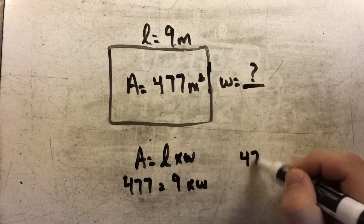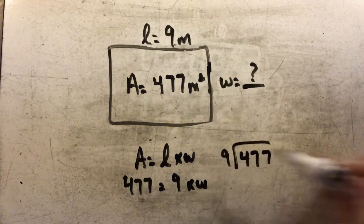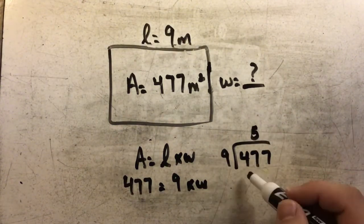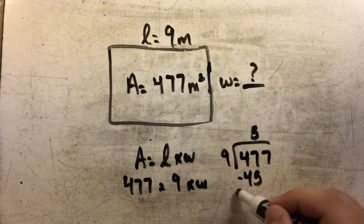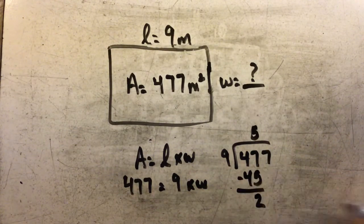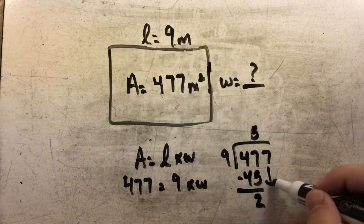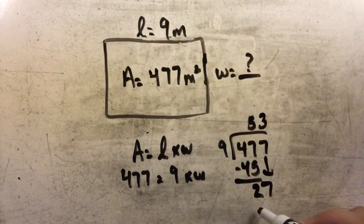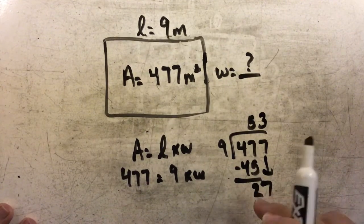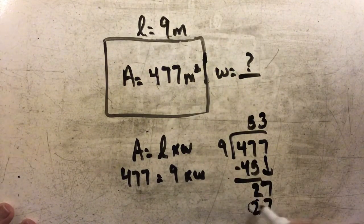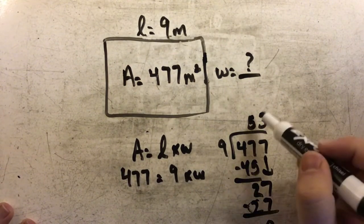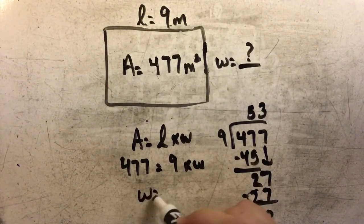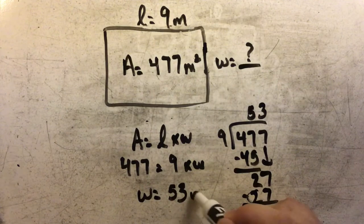I'll divide 477 by 9. 9 goes into 47 five times. 5 times 9 is 45, and when I subtract, there's 2 left over. 9 goes into 27 three times. 3 times 9 is 27 with nothing left over. So my missing width is 53 meters.